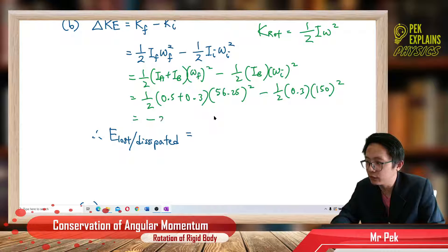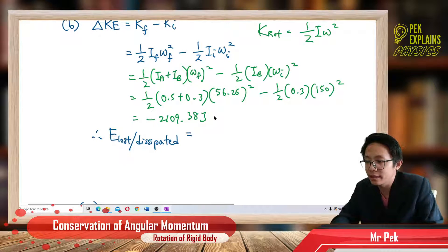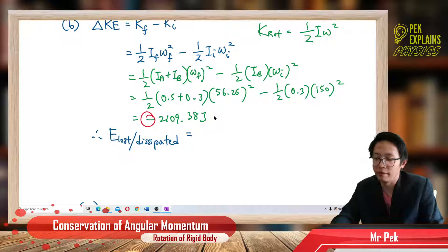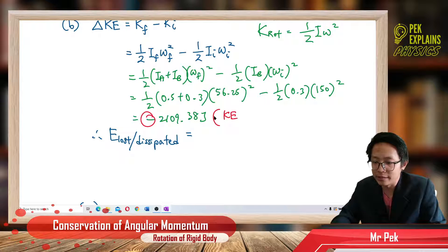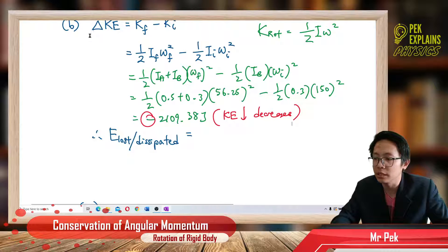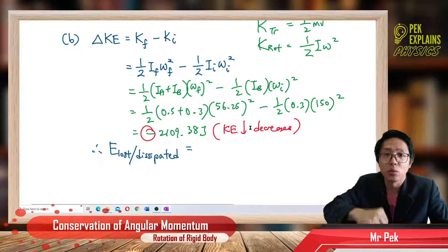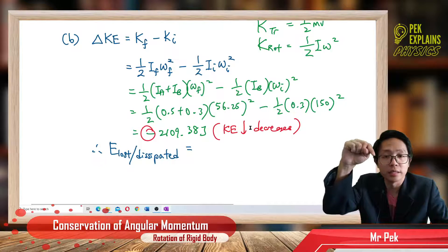I got negative 2109.38 joules. Why is it negative? Negative means kinetic energy decreases — the change is a decrease in kinetic energy.